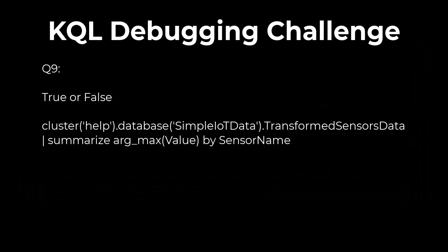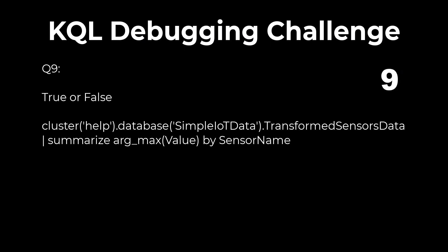Problem 9. True or false? The following query will show all the fields from the maximum quantity in the value field. The answer is false. To show all fields in the output, arg_max requires a comma and an asterisk. The asterisk represents displaying all fields in the output.